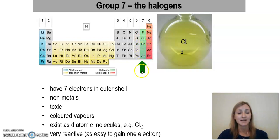Bromine, iodine, and astatine. Those are in Group 7, and they are also very reactive elements. This is because they've got seven electrons in their outer shell. They are non-metals, and they're typically toxic with coloured vapours.